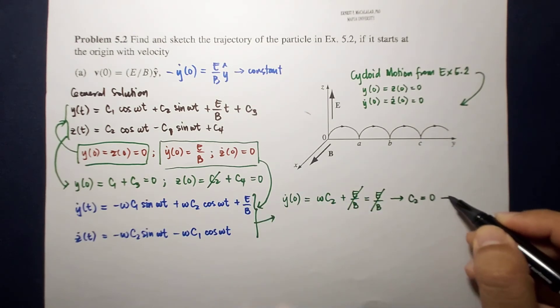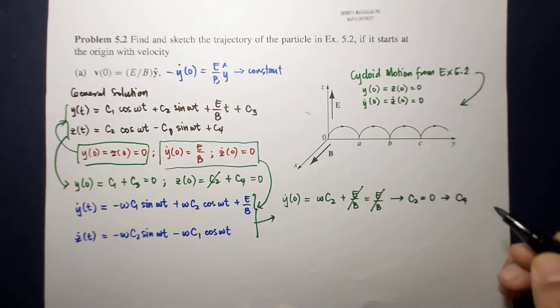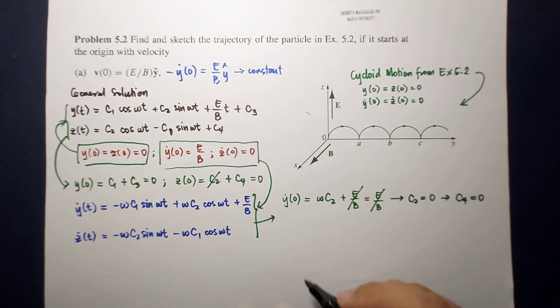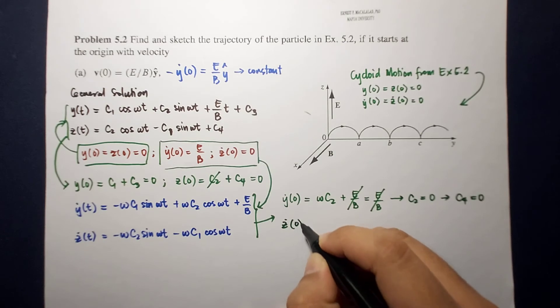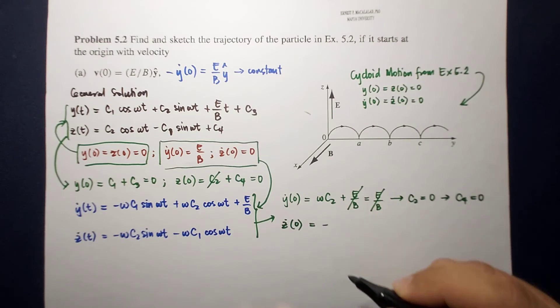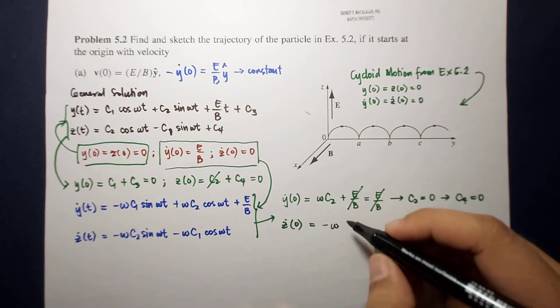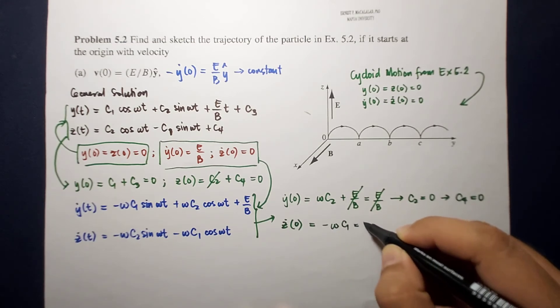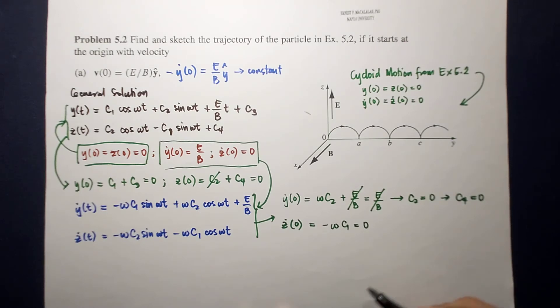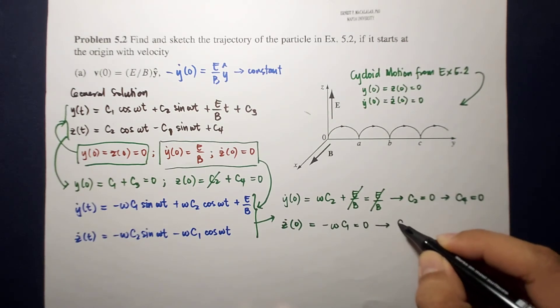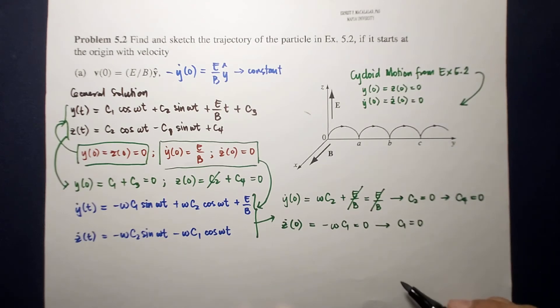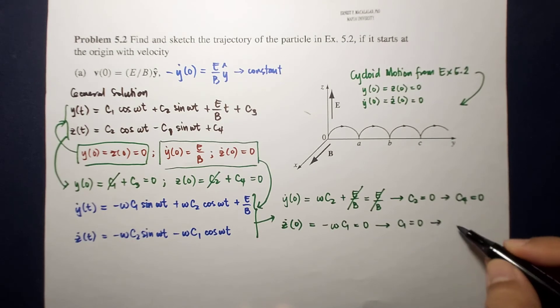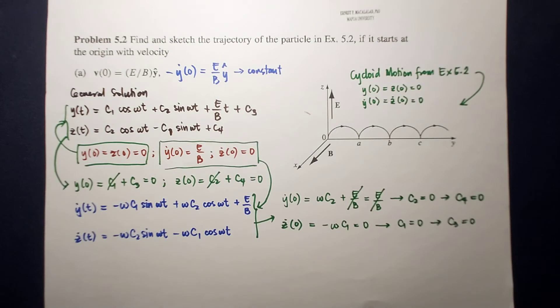And that means this is 0. From this fact, this can give you c4 which is also equal to 0. For z, z dot at time equal to 0 is negative omega c1 and this is equal to 0. So, this means that c1 is equal to 0. So, this tells us that c3 is also equal to 0.